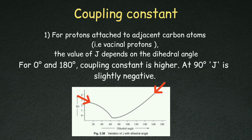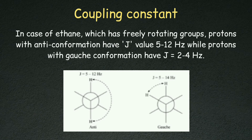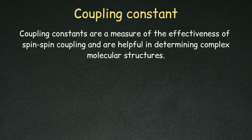In the case of vicinal coupling, the coupling constant depends on the dihedral angle. If the angle is 0 to 180 degrees, the coupling constant will be larger. If the angle is 90 degrees, the coupling constant will be slightly negative. Where there is free rotation, protons in the anti conformation have a J value of 5 to 12 Hz, and protons in the gauche conformation have a J value of 2 to 4 Hz.